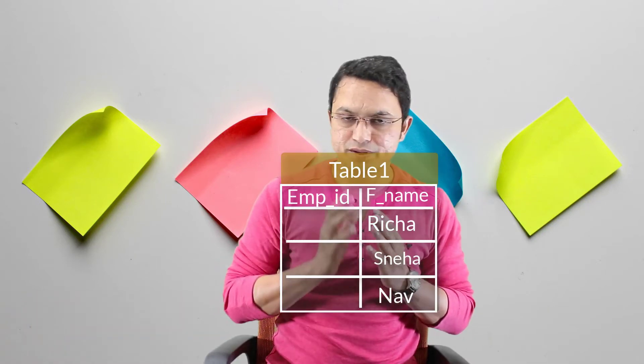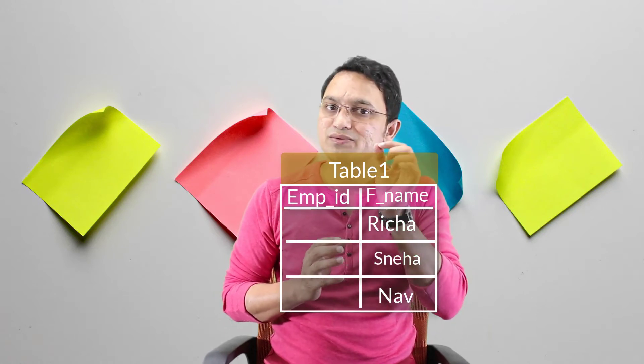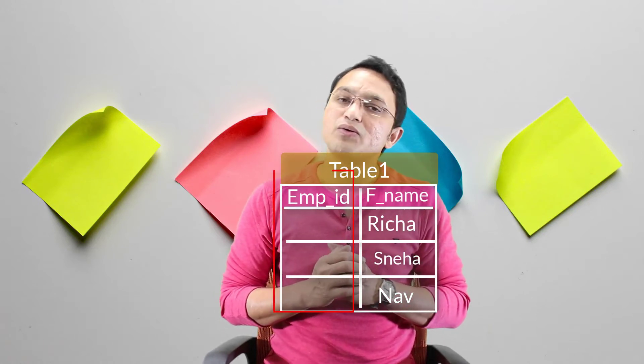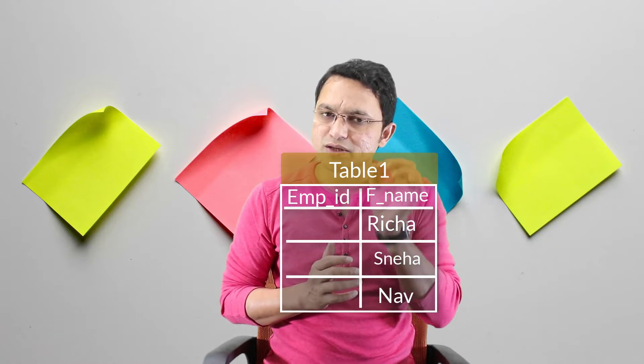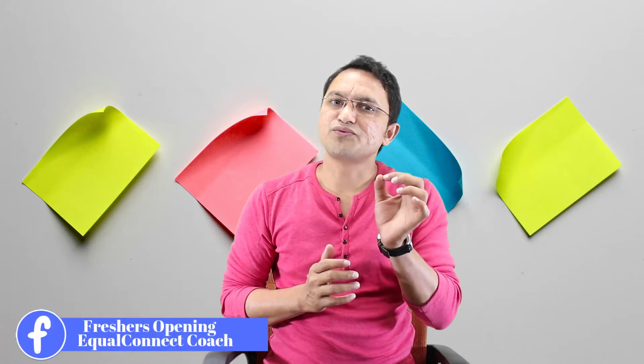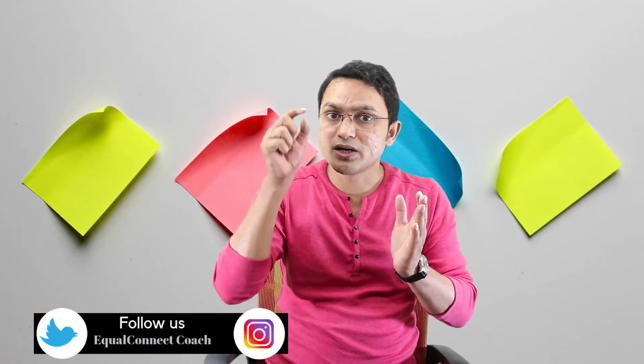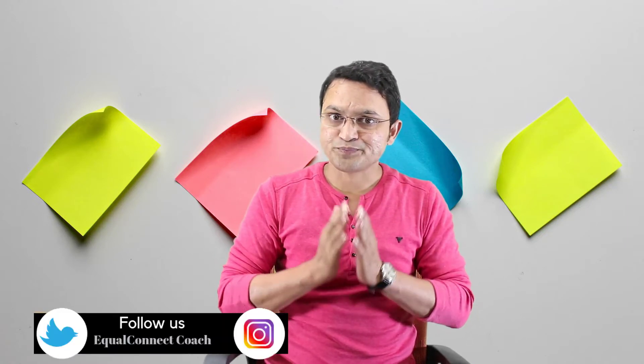Let's say you have a table with a column called employee_id. You have a requirement: whenever you insert any row into this table, the employee_id should be filled with an auto number. You can achieve this with the help of a sequence — you create the sequence and use it whenever you insert a row.